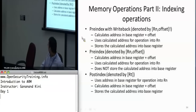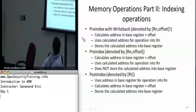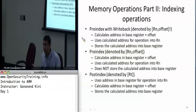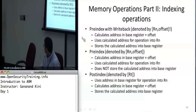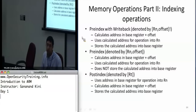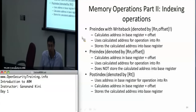There are two more addressing modes. The first is called pre-indexed with writeback. The difference is you put an exclamation mark at the end of the square brackets. All that means is take the newly calculated address and store it back into the base address register. So when you add the offset, after the load or store operation, the register will contain the new value — base address plus the offset.